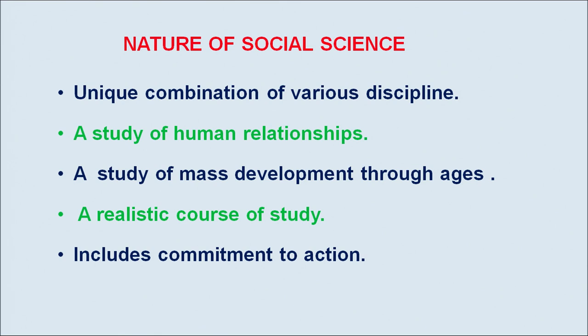Next, it is a realistic course of study. It provides a real-life situation to the learners. Effective interpretation of these would necessitate intensive study of many social problems, processes and phenomena. Next, it includes commitment to action. Social science enables every learner to be an informed citizen. Through its socially significant nature of the content, it helps the students to learn how to make the society prosperous and progressive.